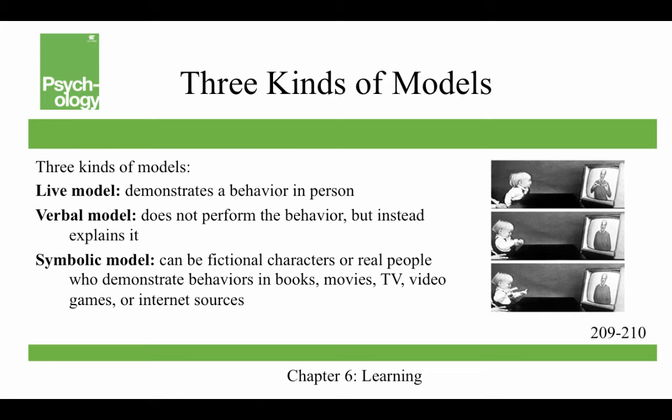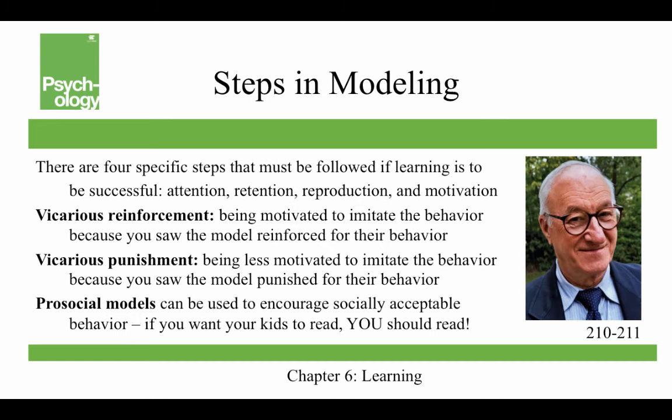Bandura describes three kinds of models. A live model demonstrates the behavior in person for you. A verbal model doesn't perform the behavior but instead explains it — like a coach who stays in a golf cart and just tells people what to do. A symbolic model can be fictional characters or real people who demonstrate behaviors in books, movies, TV, video games, or internet sources — like watching an exercise video, a yoga video, or somebody teaching you how to do something via the internet.